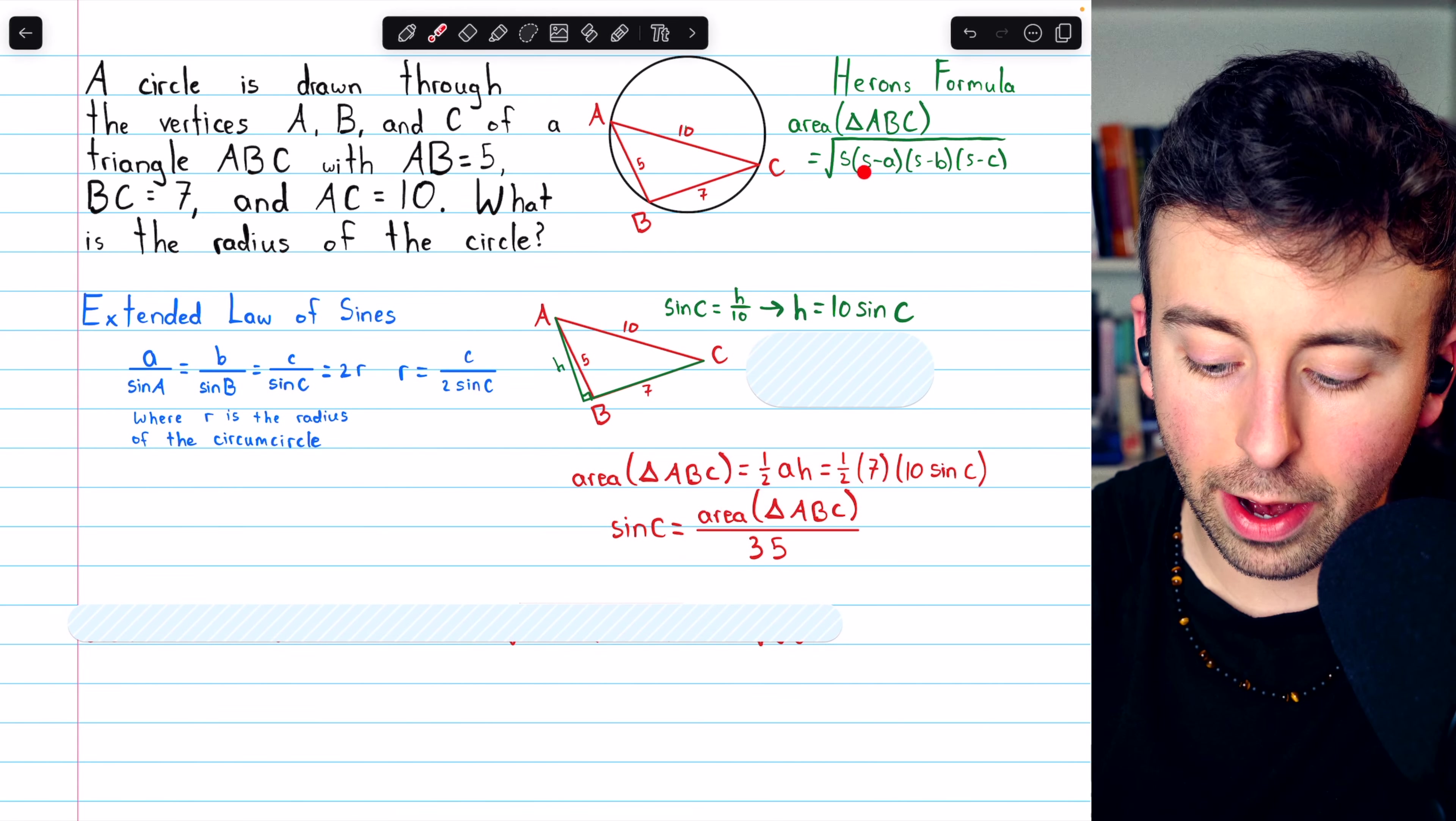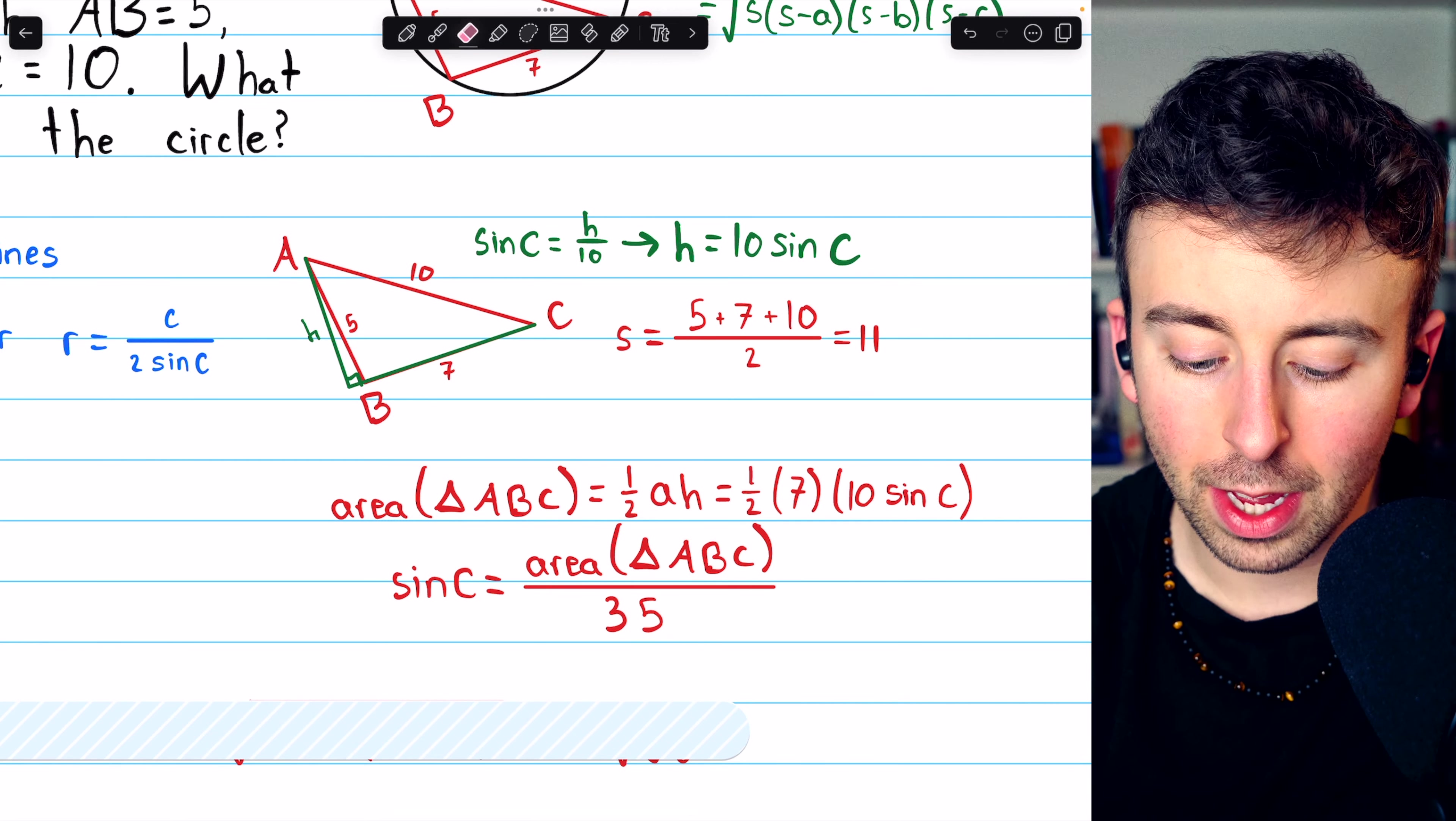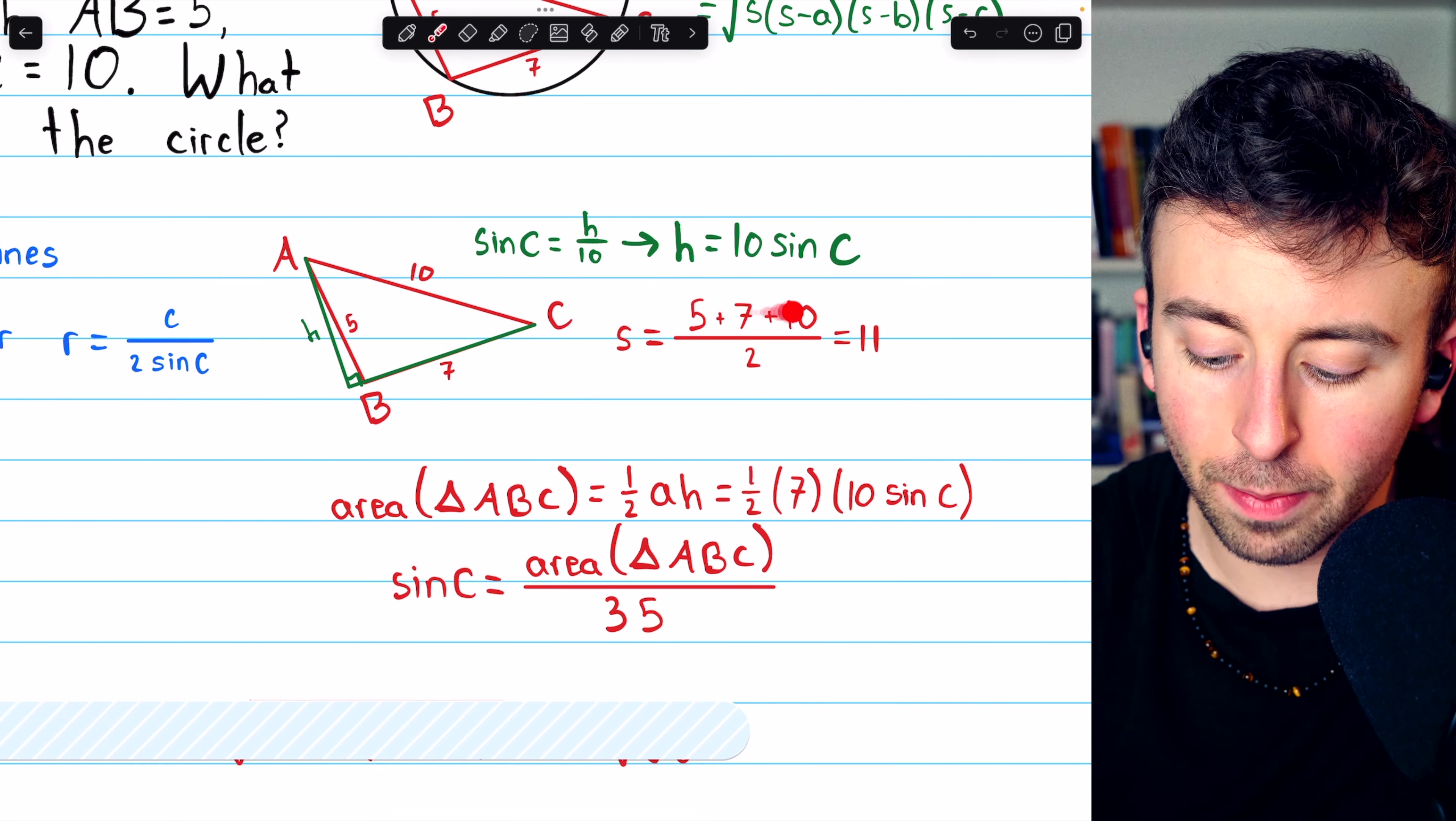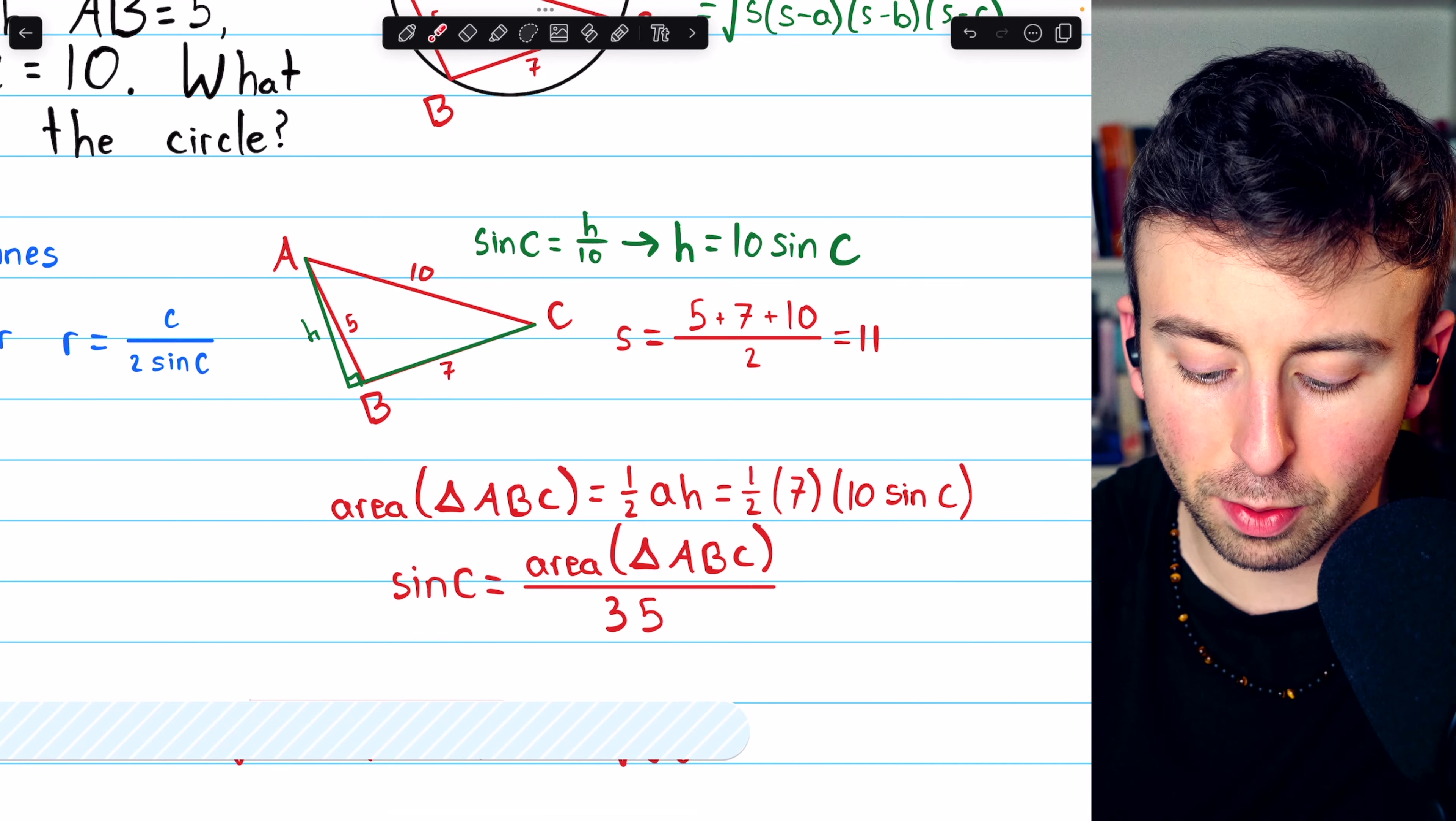Heron's formula requires the semi-perimeter S. So let's calculate the semi-perimeter of our triangle. That's just half the perimeter. So 5 plus 7 plus 10 divided by 2. 5 plus 7 plus 10 is 22 divided by 2 is 11. So that's the semi-perimeter.